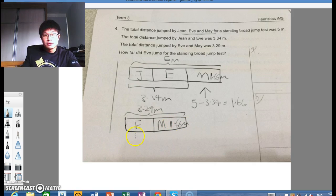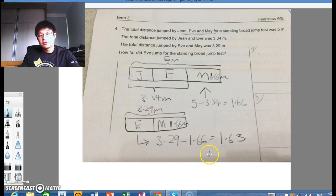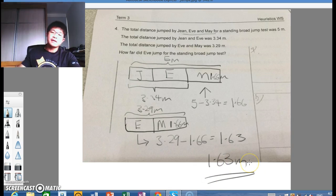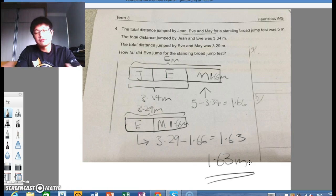So, to find Eve is just 3.29, subtract 1.66, you get 1.63. So Eve jumped 1.63 meters. There you have it, your answer. So, it's very straightforward. It's just that you need to be careful with the model, the arrangement of the model. Other than that, it's pretty straightforward.